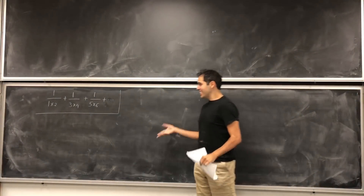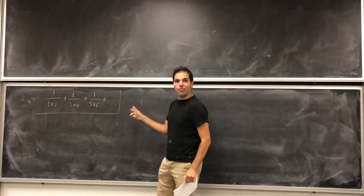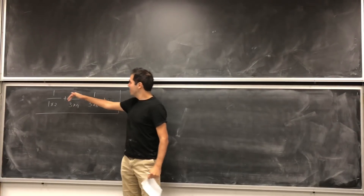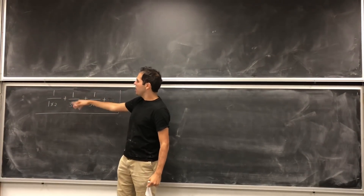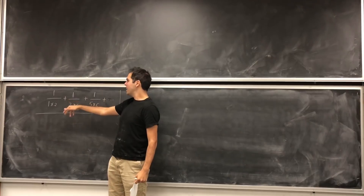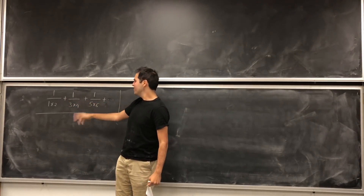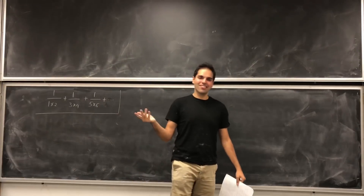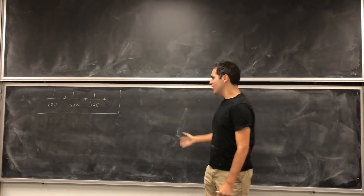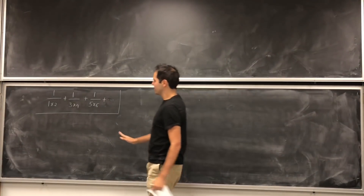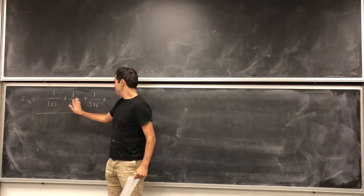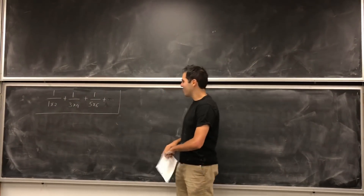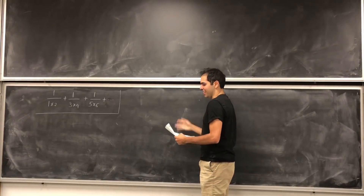Alright, thanks for watching, and today we'll do something really cool, as usual. Today we will calculate the sum of 1 over 1 times 2, plus 1 over 3 times 4, plus 1 over 5 times 6, etc. It's cool because if you just had one of those terms, the sum actually diverges, but here it does converge, and we'll calculate that sum.